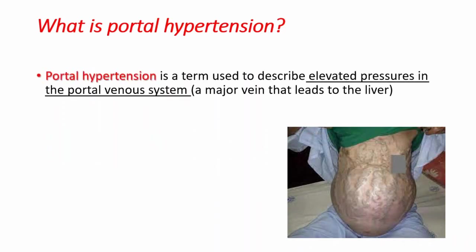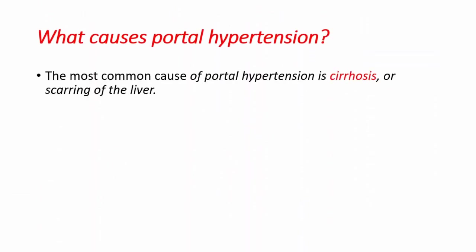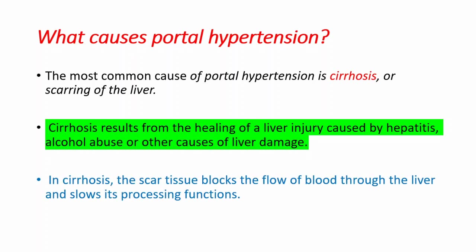Portal hypertension is a term to describe elevated pressure in the portal venous system, which is a major vein that leads to the liver. The most common cause of portal hypertension is cirrhosis — scarring of the liver that results from the healing of a liver injury. This injury can be caused by hepatitis, alcohol abuse, or other causes. In cirrhosis, the scar tissue blocks the flow of blood to the liver and slows its processing.